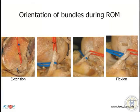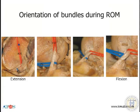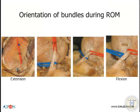We know that the two bundles rotate during movement from extension to flexion. On the left-hand side you see the two bundles parallel to each other, and on the right-hand side in flexion you see that the PL bundle insertion on the femur side subducts the AM bundle, and we have a crossing of the PL and the AM bundle.